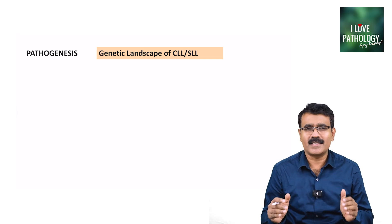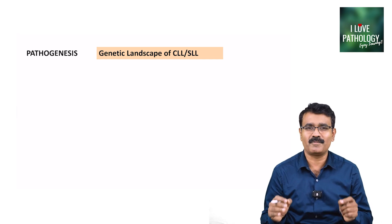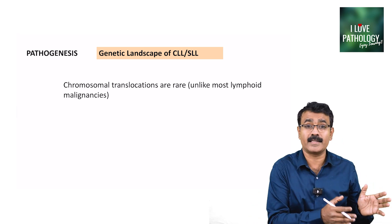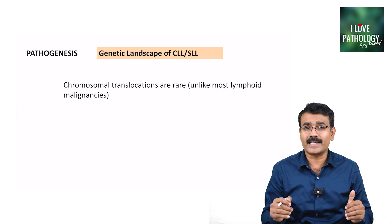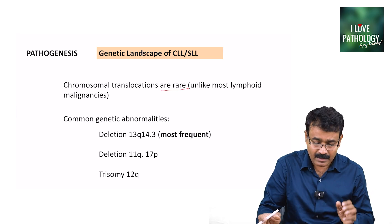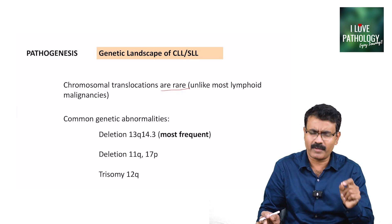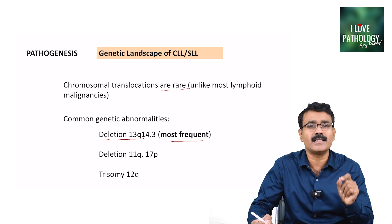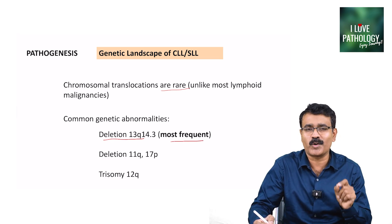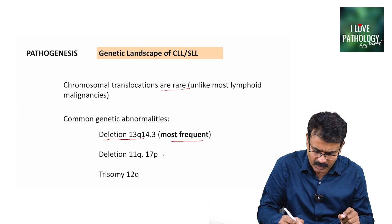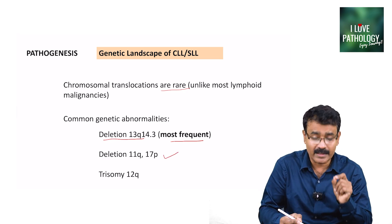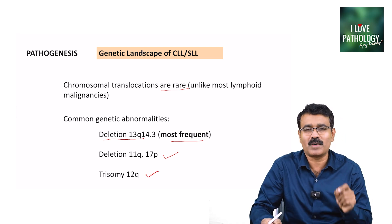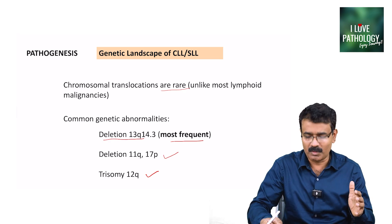A very important aspect is understanding the pathogenesis of chronic lymphocytic leukemia. Chromosomal translocations are rare in this case. The most common genetic abnormality is deletion of the long arm of chromosome 13 — that is the most frequent chromosomal abnormality in CLL. Other important genetic abnormalities include deletion of 11q, deletion of the short arm of chromosome 17, and trisomy of chromosome 12.